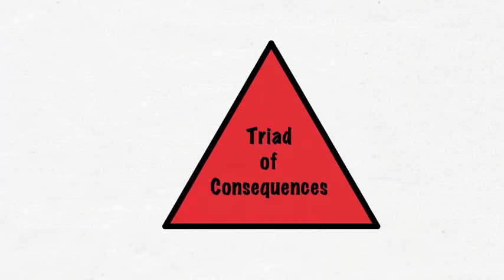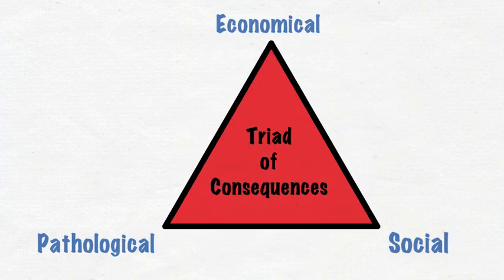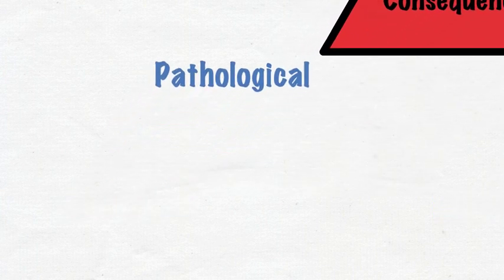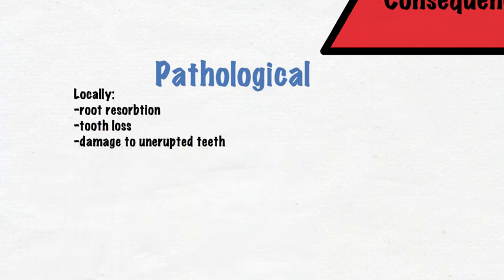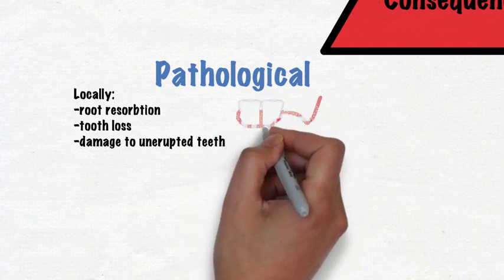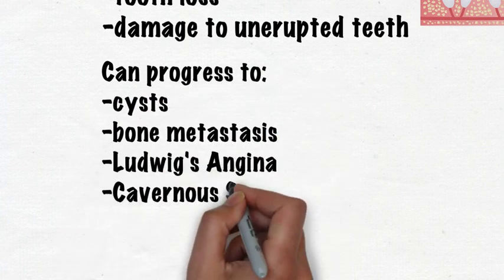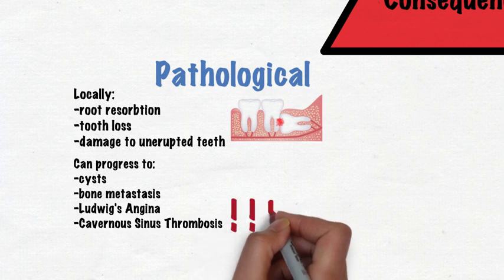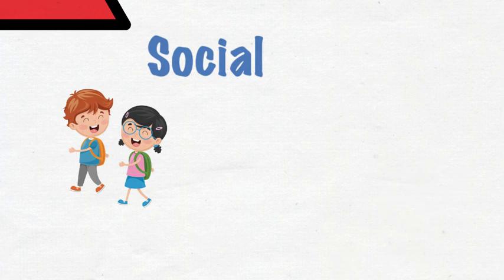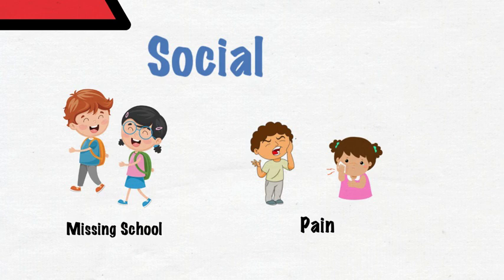When these infections progress and go untreated, there is often a triad of pathological, social, and economical consequences. Pathological consequences can be as minor as affecting only the single infected tooth, but can easily progress to the rest of the body. Locally, we often see root resorption, tooth loss, and devastating effects to the unerupted permanent teeth. Infections can also progress to cyst formation, bone metastasis, and at the most extreme, manifestations such as Ludwig's angina and cavernous sinus thrombosis, which can be life-threatening. Leaving these infections untreated also leads to social pitfalls like children missing school and activities, and the psychological burden of pain.